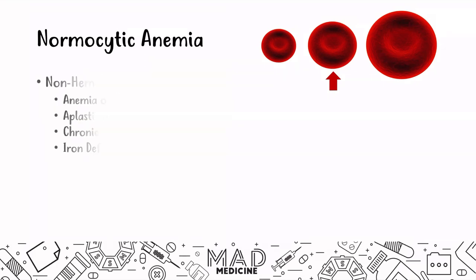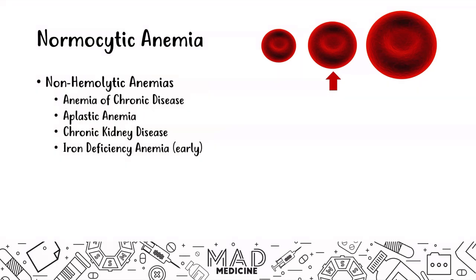When it comes to normocytic anemias, we are going to be discussing non-hemolytic anemia today, specifically aplastic anemia. We have already discussed anemia of chronic disease in a previous lecture — go check that out on the playlist. We will also discuss anemia of chronic kidney disease and early-stage iron deficiency, though late stage was covered in our microcytic anemia lecture.